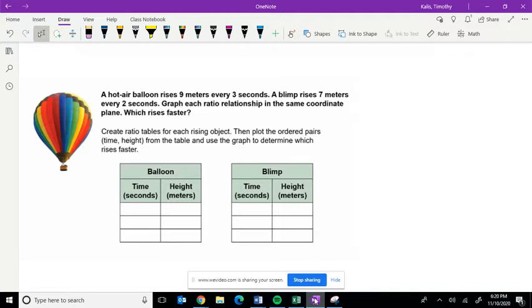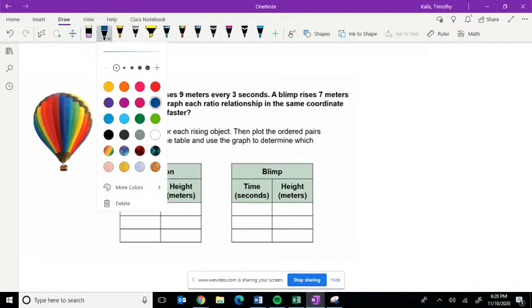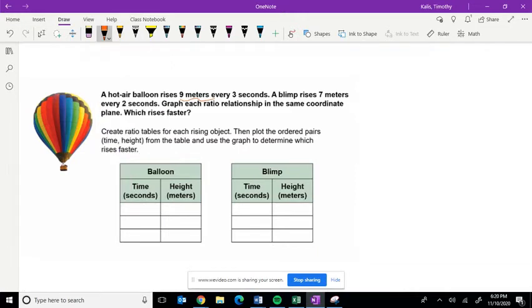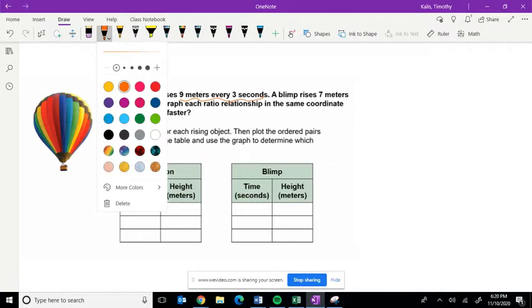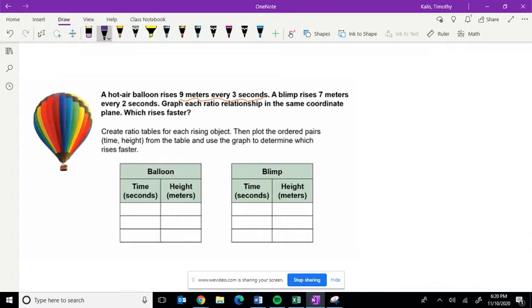So the question is, a hot air balloon rises 9 meters every 3 seconds. A blimp, on the other hand, rises 7 meters every 2 seconds.